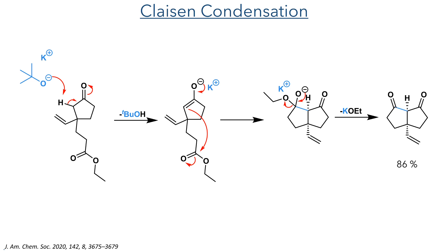With the vinyl group in place, the molecule was subject to a Claisen condensation. The alpha position was deprotonated with potassium tert-butoxide, and the enolate then underwent intramolecular attack with the ester. The intermediate then eliminates potassium ethoxide, forming a symmetric diketone in an 86% yield. We've seen this diketone before in the Lewis synthesis of batrachotoxin A, where it was also used in a desymmetrization strategy.